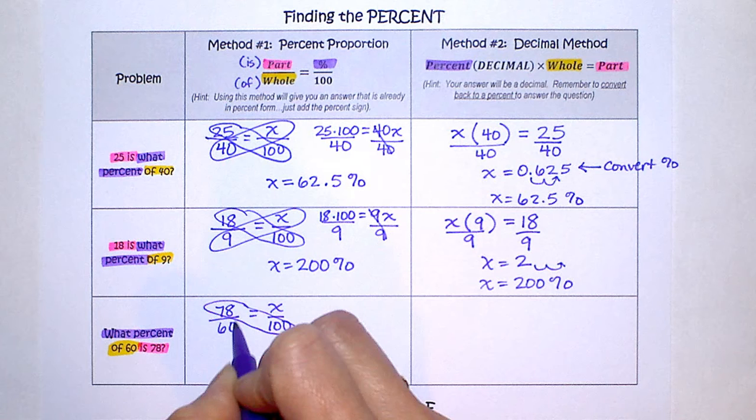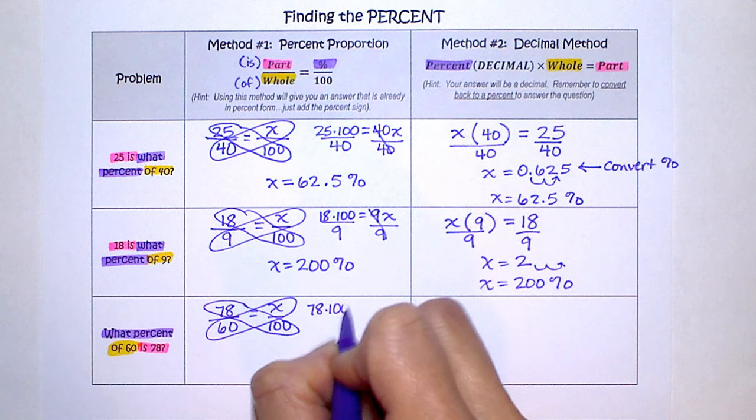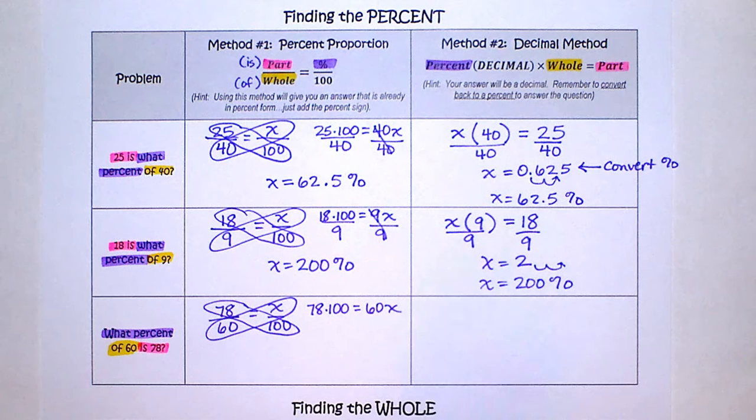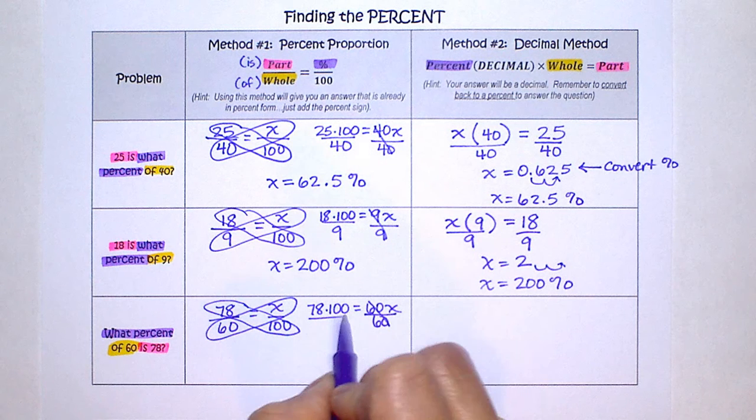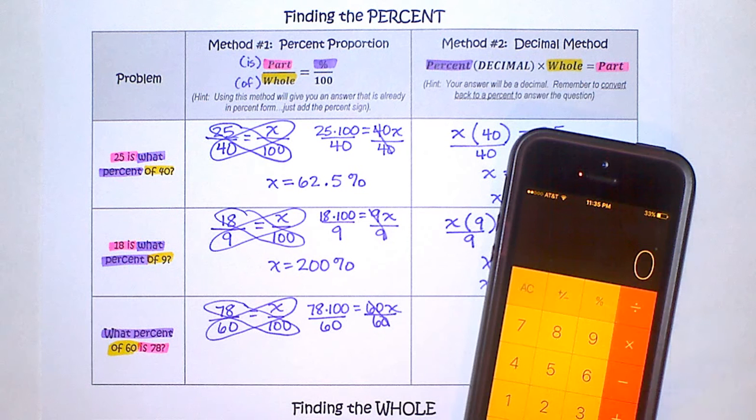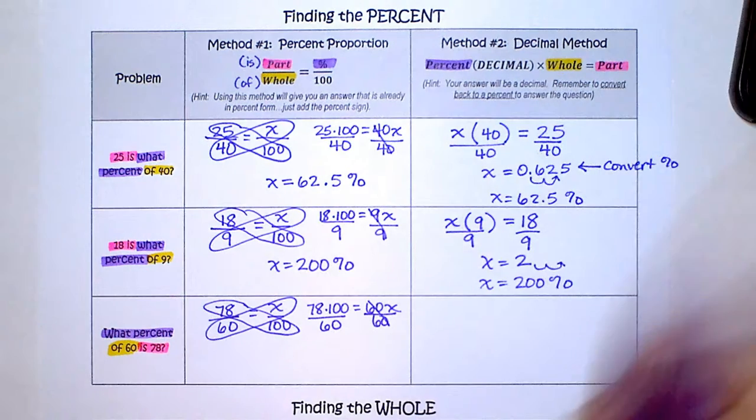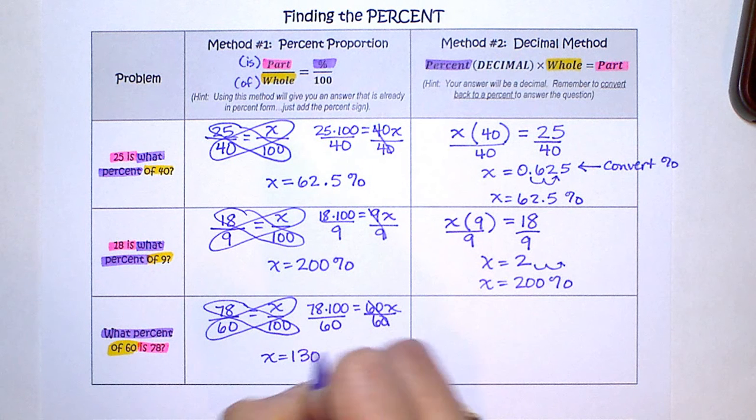And we're going to do the cross products. Again, if I'm going too fast, pause the video to catch up with me. So here are the cross products. We need to divide both sides by 60. And then we're going to use our calculator. 78 times 100 divided by 60 is 130 percent. So x equals 130 percent.